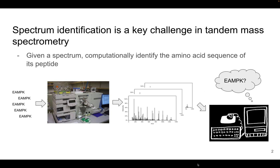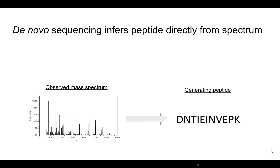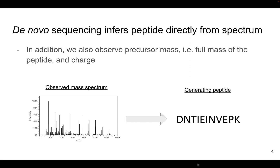To lay out the problem first, spectrum identification remains a key challenge in tandem mass spectrometry. At the end of a tandem mass spectrometry experiment, given mass spectra, trying to identify the amino acid sequence of the generating peptide using computational means at a massive scale remains a challenge. A particular flavor of this problem, de novo peptide sequencing, basically relies on inferring the peptide directly from the observed mass spectrum without using a database of peptides or spectral libraries, which makes this a particularly challenging problem.